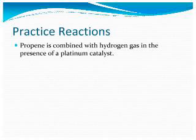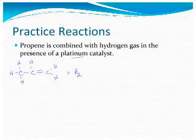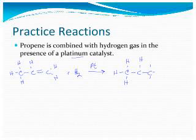Let's do another reaction where we have propene combined with hydrogen gas in the presence of a platinum catalyst. So we have propene — that's three carbons, two of them bonded with a double bond — and we have hydrogen. In order for this reaction to occur, it does need a catalyst; here we're using platinum. We're going to go from an unsaturated to a saturated substance where the product has as many single bonds as it can have. So propane is our product.